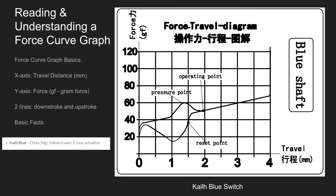So let's start with the basics. In front of us is a force curve graph provided by Kaihua, the manufacturer for Kale switches. This is the graph for their Kale Blue switch. Down at the bottom is the X axis, which measures your travel in millimeters. On the Y axis, that measures the force in grams-force. You may be wondering why there are two lines on this graph. One line is the downstroke — as you are pressing the switch down — and the other is as the switch rises back up to its natural state.